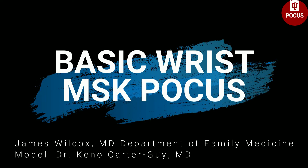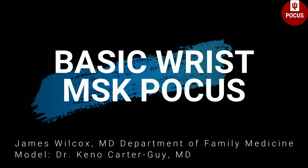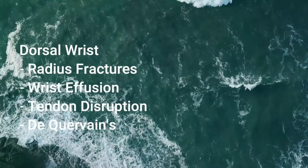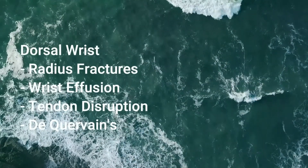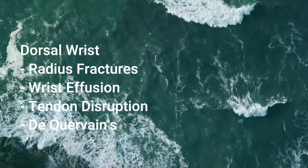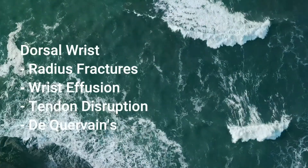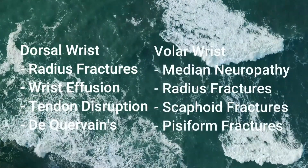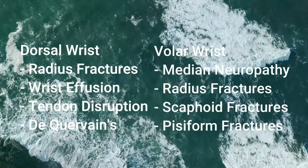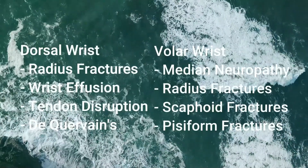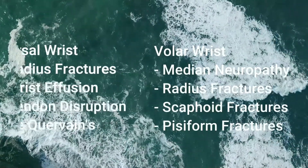This is Dr. James Wilcox, and today we will demonstrate a basic wrist ultrasound. We will be going over the dorsal wrist, looking at radius fractures, wrist effusion, tendon disruption, and De Quervain's, and the volar wrist, looking at carpal tunnel syndrome, radius, scaphoid, and pisiform fractures.